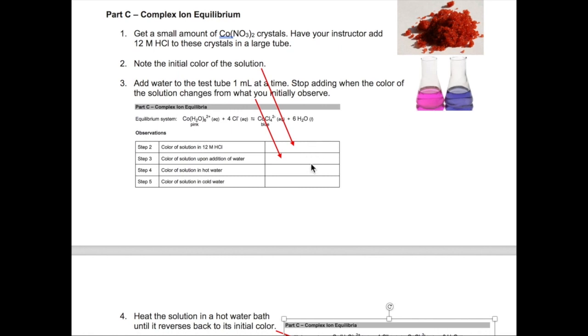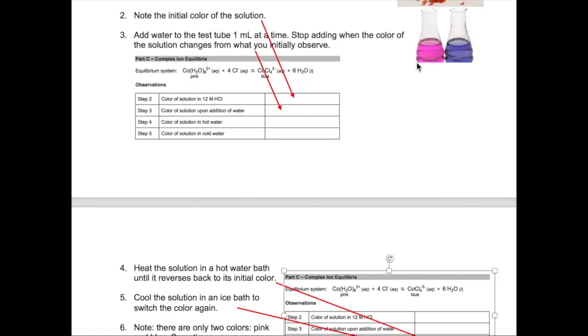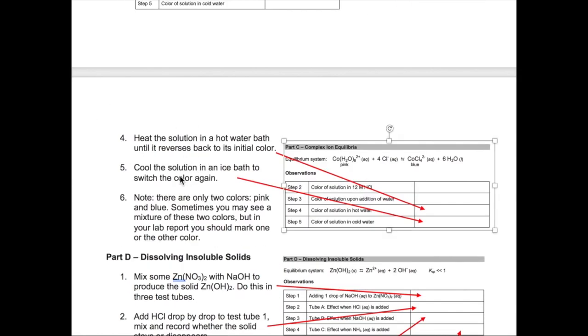Note that the two colors that you will observe of these complex ions is either pink or blue. So, what you have to record here is either pink or blue and no other color. If you see some kind of a different color, try to figure out whether the color is closer to pink or to blue. Next, you will test the effect of temperature change by heating and cooling that test tube containing the complex ion and again recording the color that you observe in rows three and four of your lab report.